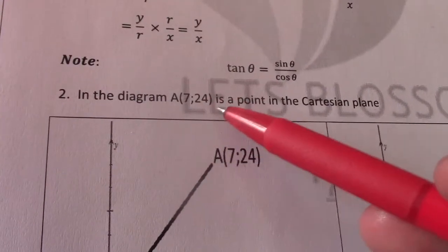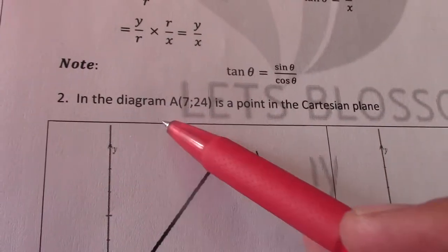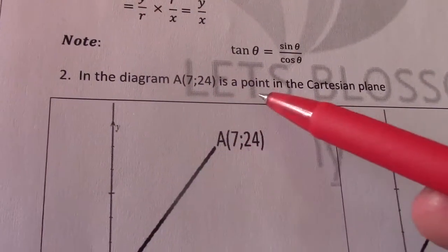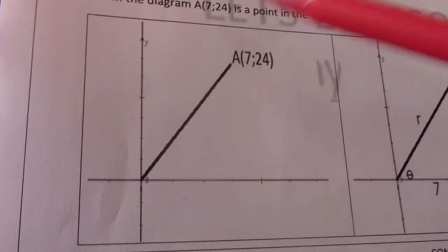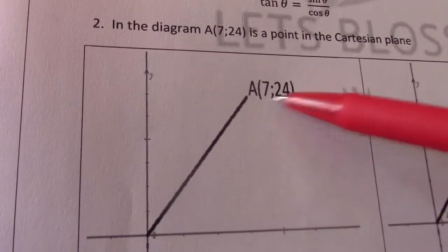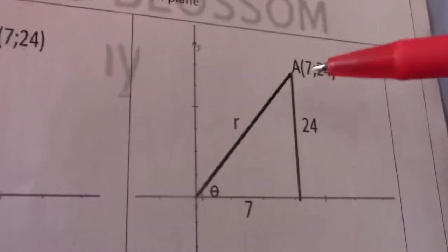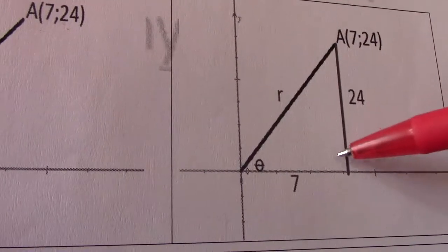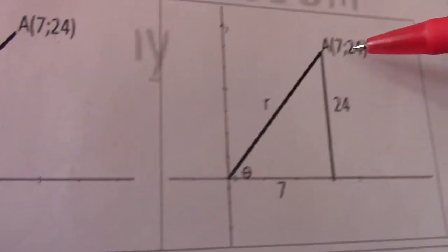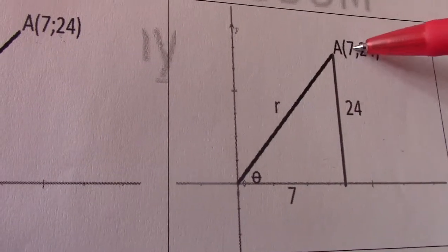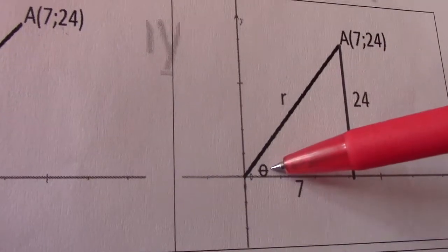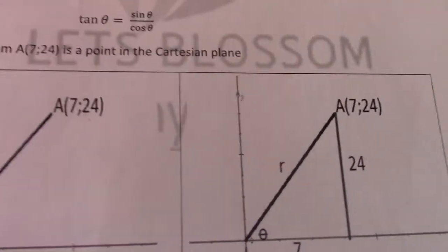Now let's look at the one where we actually give you the coordinates. The diagram A is 7 and 24. It is a point in the Cartesian plane. So there is my point A is 7 and 24. So again complete my right angle triangle. 90 degree there. Y is 24. X is 7. It is theta. That is R.